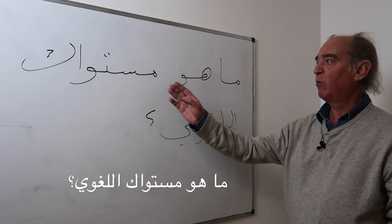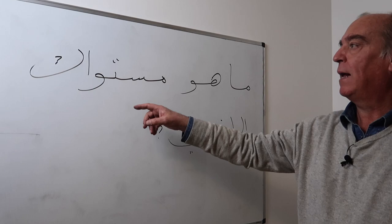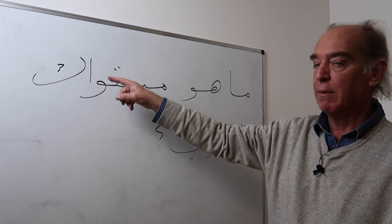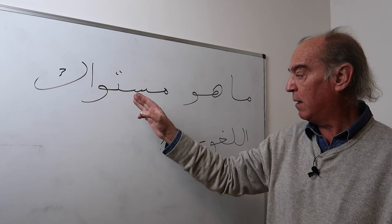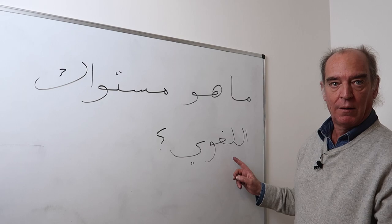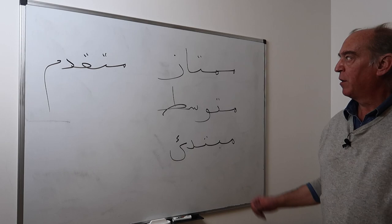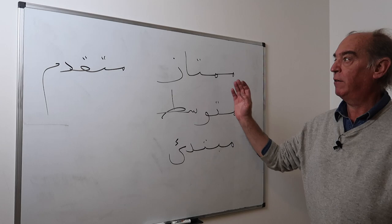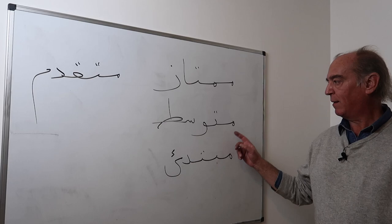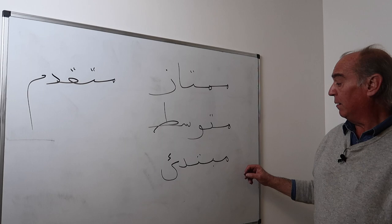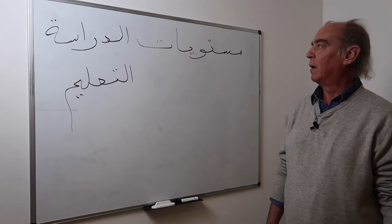'Ma huwa mustawaka al-lughawi?' — or 'mustawaki' for a woman — means 'What is your linguistic level?' Note that 'mustawa' is normally written with alif maqsura, but with a suffix you write it with alif mamduda: 'mustawaka.' The adjective 'lughawi' comes from 'lugha.' Your answer could be: 'mumtaz' — excellent, 'mumtaz mutaqaddim' — advanced, 'mutawassit' — intermediate, or 'mubtadi' — beginner.